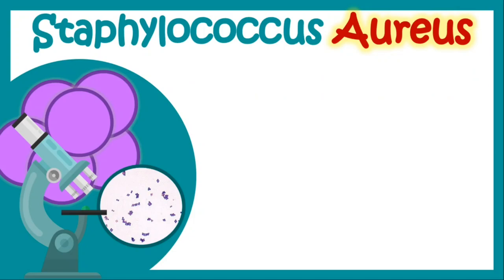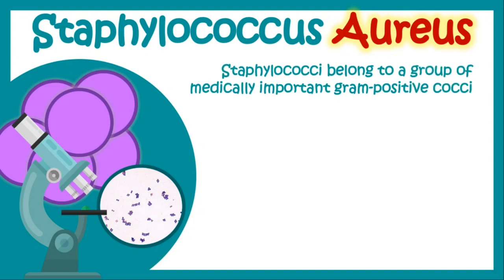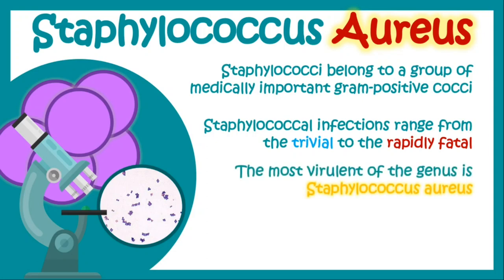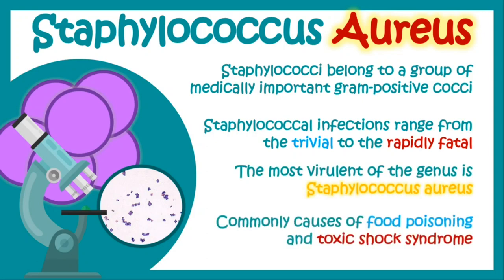Hello everyone, TheDortMedic here and in this video we will talk about Staphylococcus aureus. Staphylococcus aureus or Staphylococci belong to a group of medically important gram-positive cocci. Staphylococcal infections range from trivial infections to life-threatening, rapidly fatal infections. The most virulent of the genus is known as Staphylococcus aureus, which mainly causes food poisoning and toxic shock syndrome.